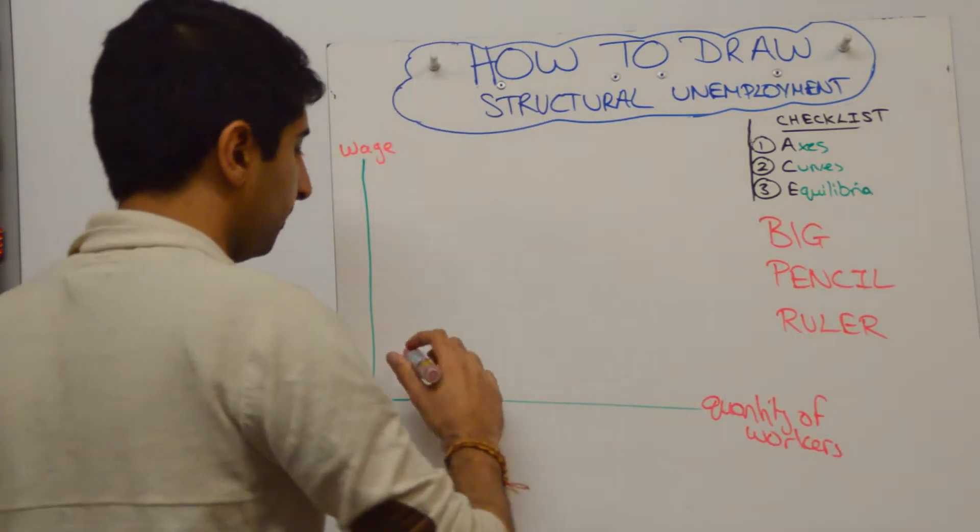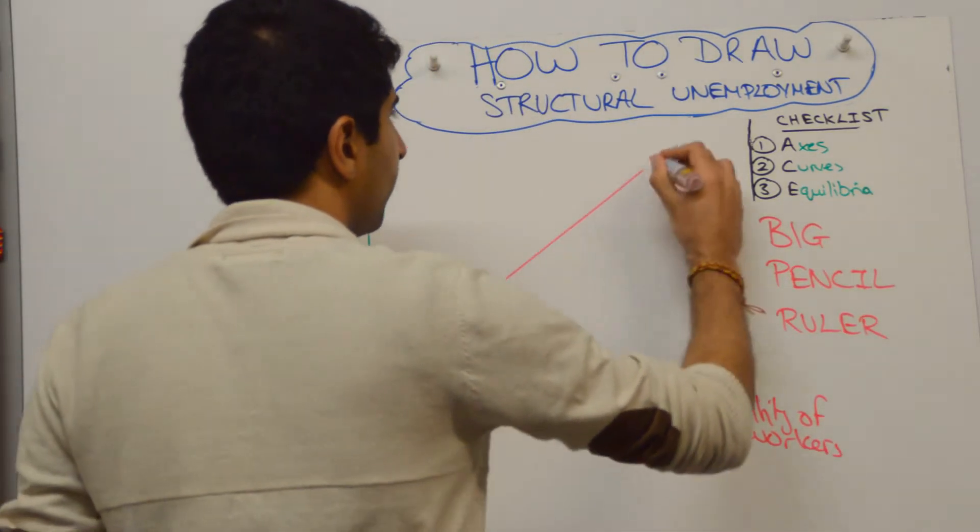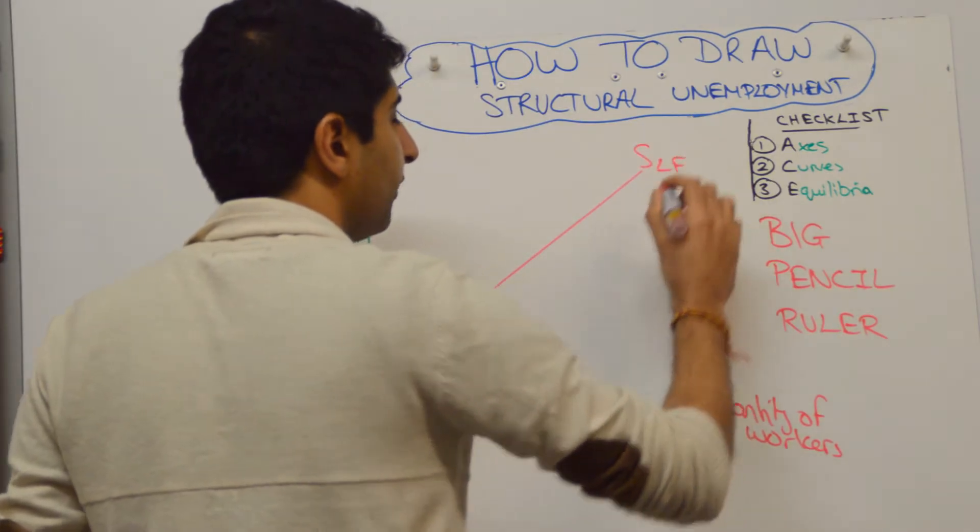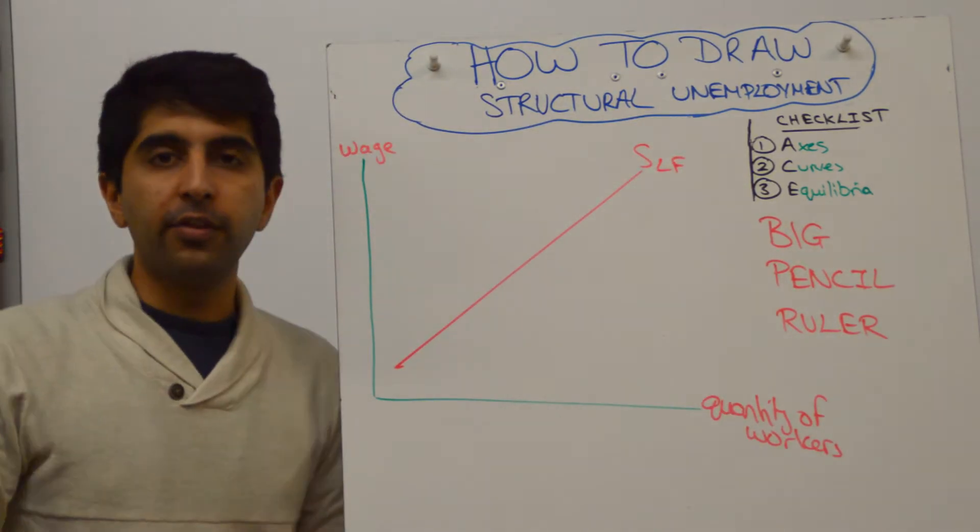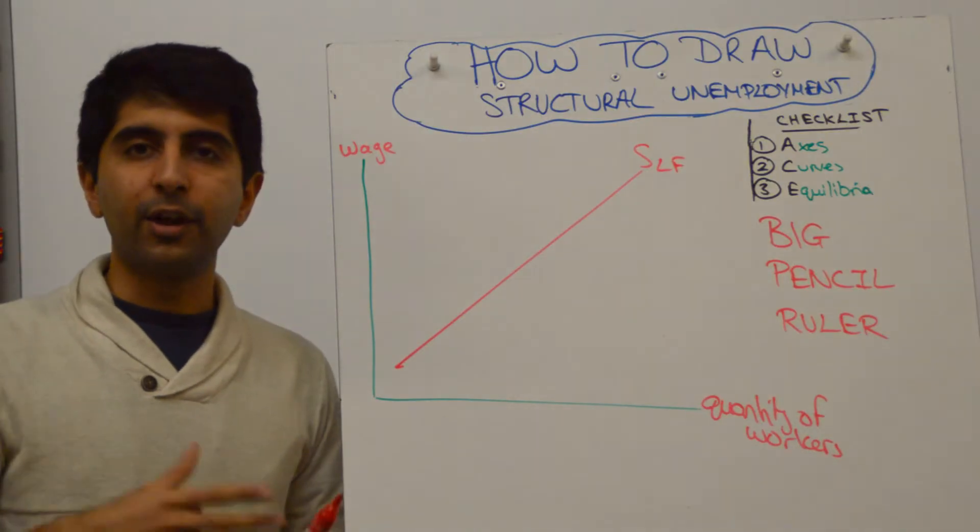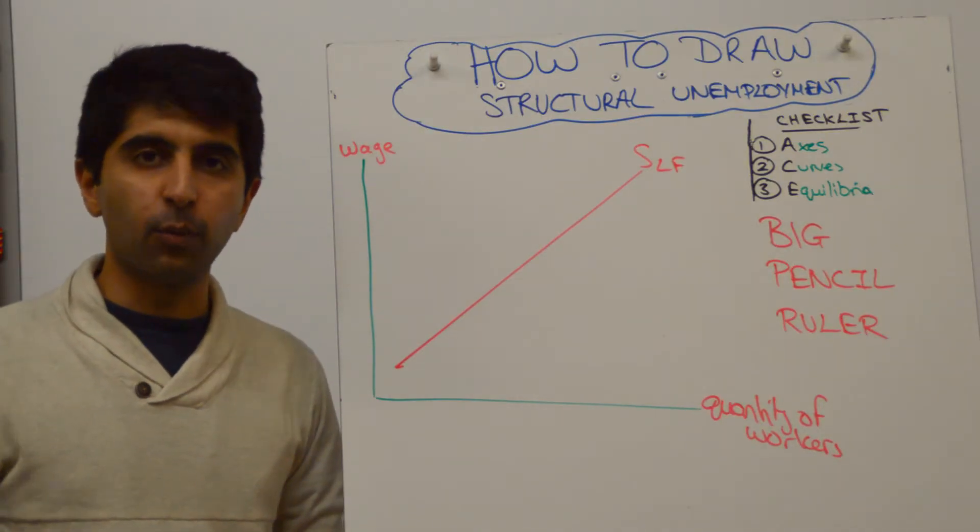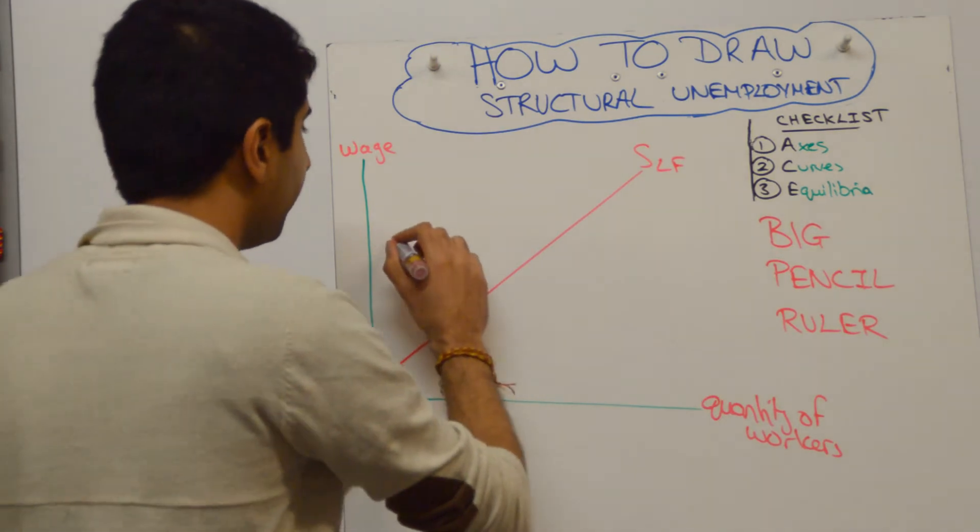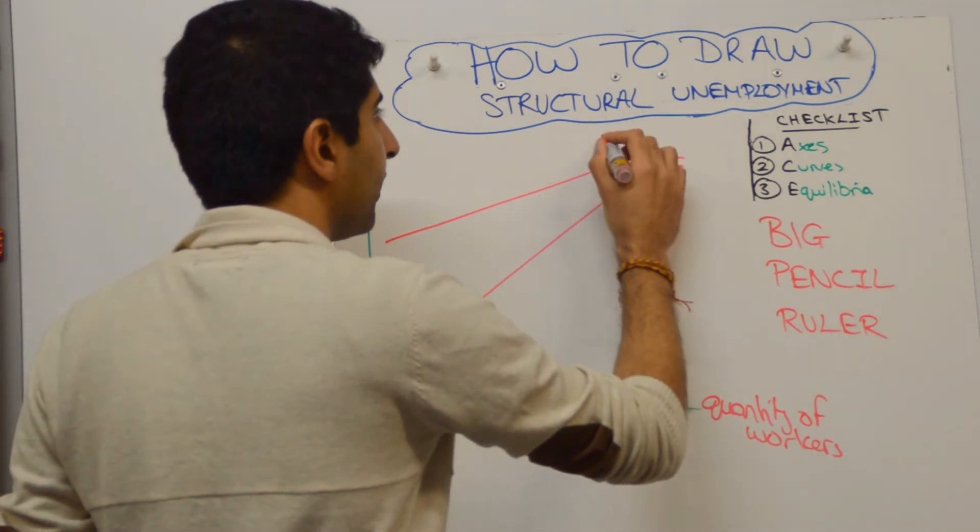You need to draw your two supply curves, so we have supply labour force here, which tells us the number of workers or the quantity of workers that are willing and able to take jobs at different wage rates.